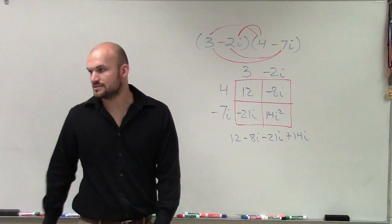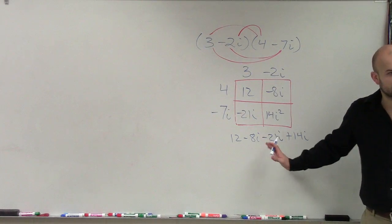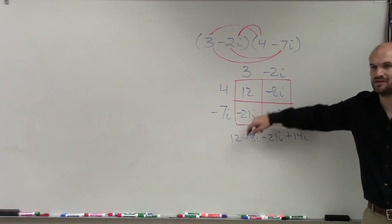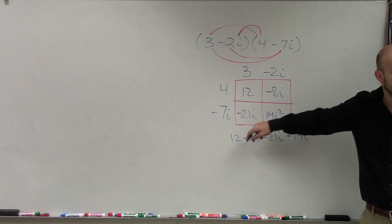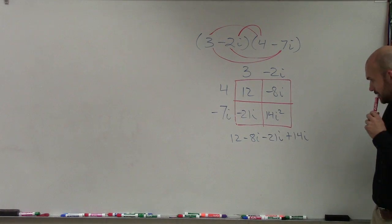Now, remember I told you guys - 14i squared. Yes, you can do the i's in the box. Remember I told you guys think of these as polynomials? You can combine these middle terms. These both have i, so it's the same imaginary factor. So you can combine them. Yes? 14i squared. Thank you.